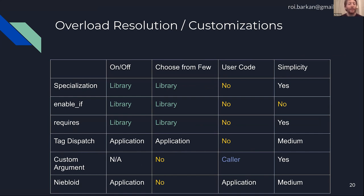Here's a summary of the different ways I talked about. The first three — template specialization, enable_if/SFINAE, and requires clauses for C++20 — are very similar. All of them basically allow a library implementer to choose whether a specific function or algorithm is allowed for certain types, or to choose from a few implementations. Specialization and requires clauses are quite simple; enable_if is not.